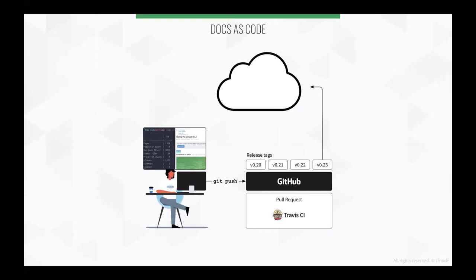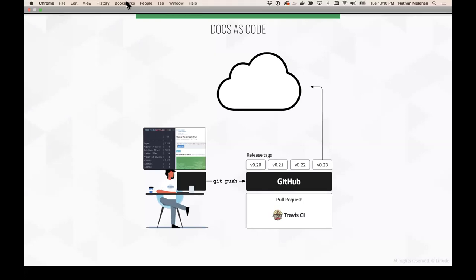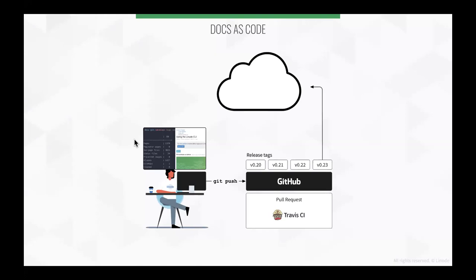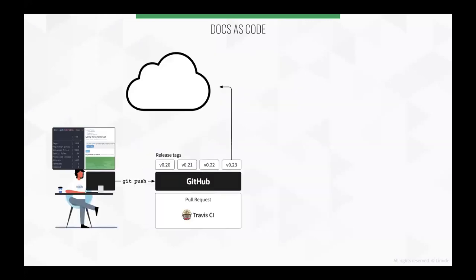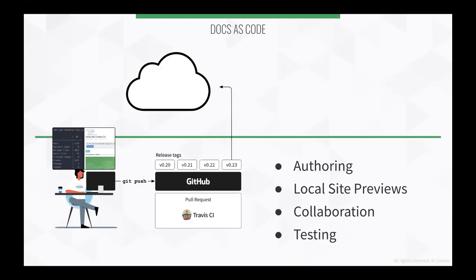Before I get too far into deploying and hosting, I want to do a quick walkthrough of the beginning parts of the docs as code workflow. I've put together a diagram and we're going to walk through it. The diagram is split roughly into two halves: the bottom half covers the heart of the docs as code methodology — authoring on your local workstation, generating local site previews, the collaboration aspects, and the testing aspects. The top half covers deploying and hosting.